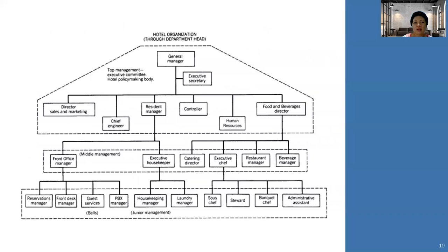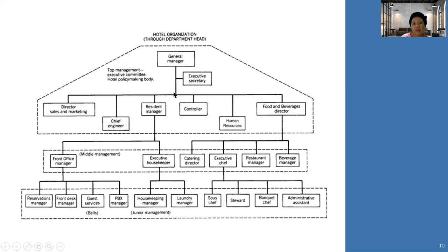Typically, hotels are managed by a general manager. Some have an assistant general manager and a house manager. The organizational chart usually includes an executive secretary, and the top management or executive committee — where the general manager sits — handles policymaking.